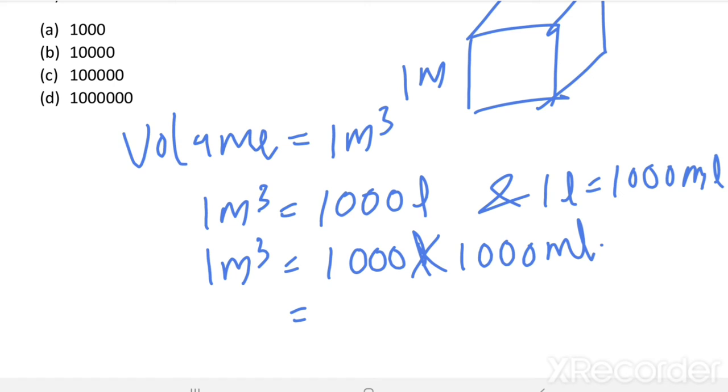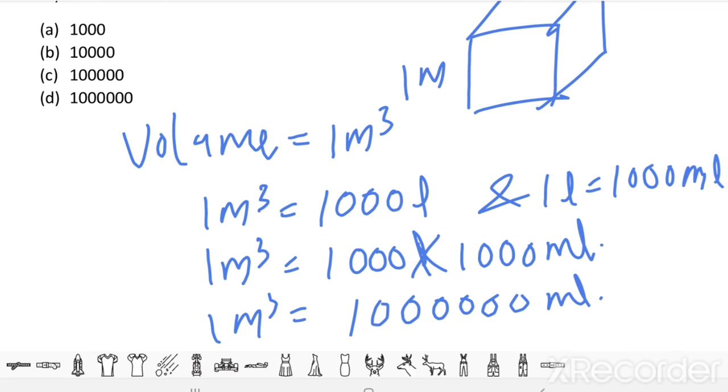This is equal to 10 lakh milliliter. Water contained in the vessel equal to 1 meter cube, which is equal to 10 lakh milliliter. Option D is the right answer.